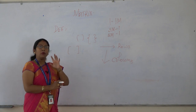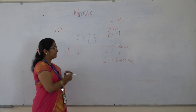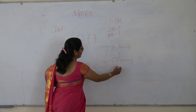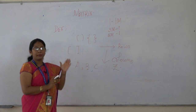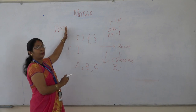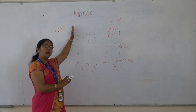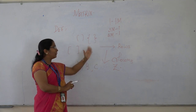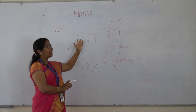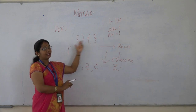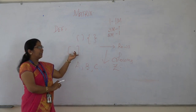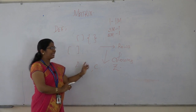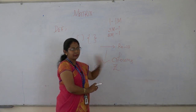Matrices are denoted by capital letters A, B, C, and so on up to Z. To summarize, a matrix is an arrangement of numbers — real or complex — arranged in rows and columns, enclosed within a pair of brackets, and denoted by capital letters A through Z.